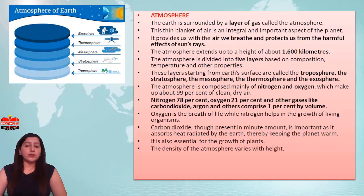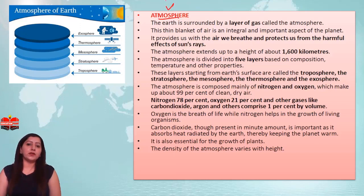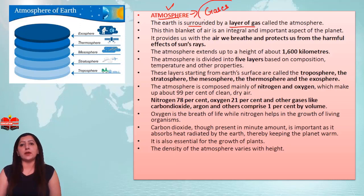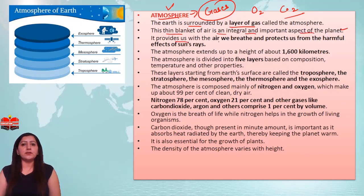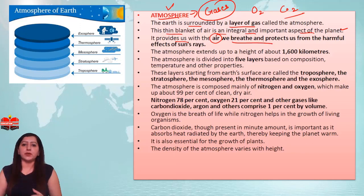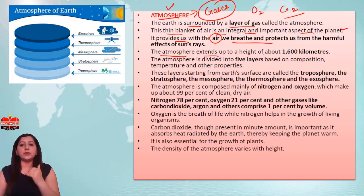That was our hydrosphere. Next is our atmosphere. The Earth is surrounded by a layer of gases. In the atmosphere, you can see gases such as oxygen and carbon dioxide. This thin blanket of air is an integral and important aspect of the planet — it provides us with air to breathe and also blocks harmful sun rays.